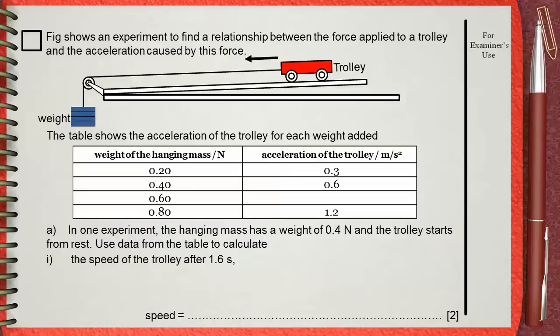In one experiment the hanging mass has a weight of 0.4 Newtons and the trolley starts from rest. Use data from the table to calculate Number 1: The speed of the trolley after 1.6 seconds.